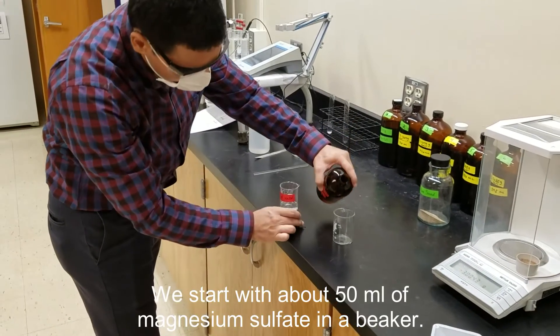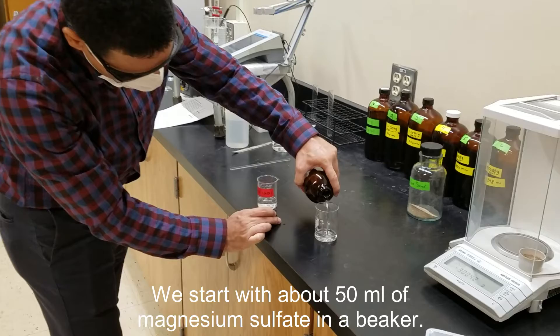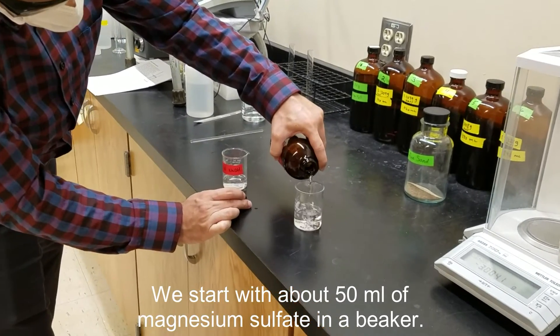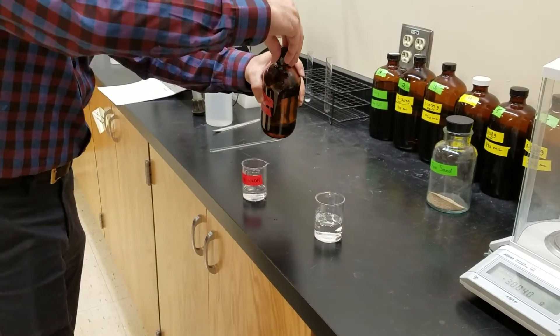To start out, we pour about 50 milliliters or so of magnesium sulfate into a beaker. This is magnesium sulfate.